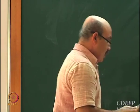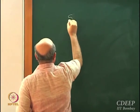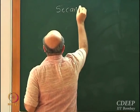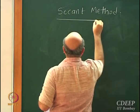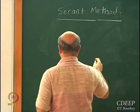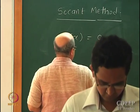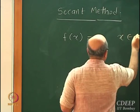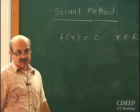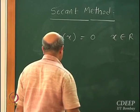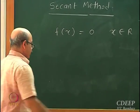I will discuss about them today. First is the secant method. In the secant method, I want to solve for f(x) = 0 where x belongs to R, a univariate problem.